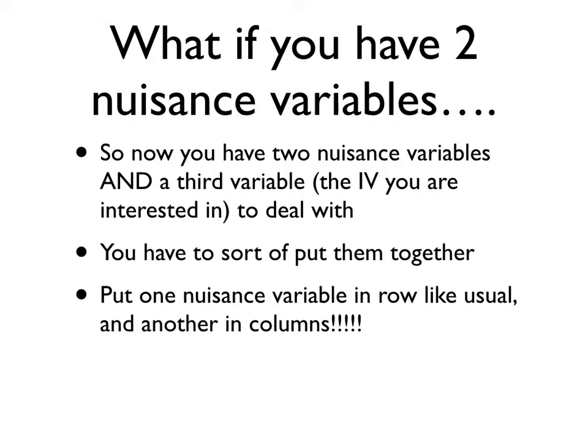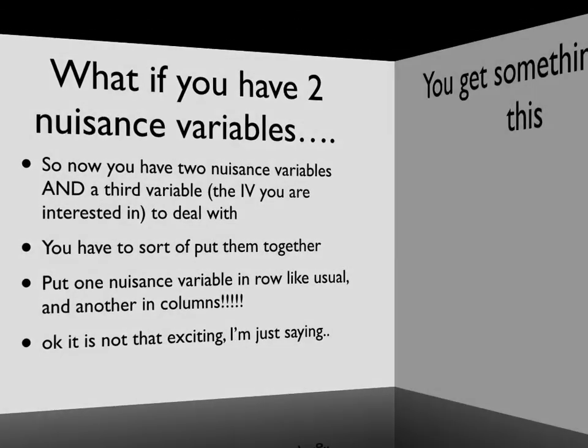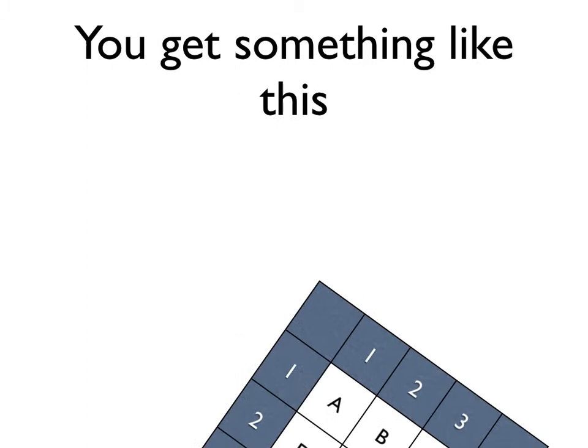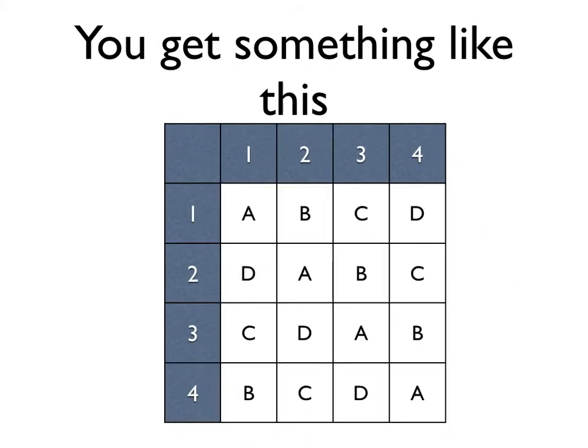Okay, this design isn't horrible. It's not common at all. So what you can do is you're going to put one nuisance variable in rows, one in the columns, and then we're going to have a level of the independent variable in each cell. So it's going to look like that. So we have 1, 2, 3, 4, 1, 2, 3, 4, and then we have A, B, C and D.